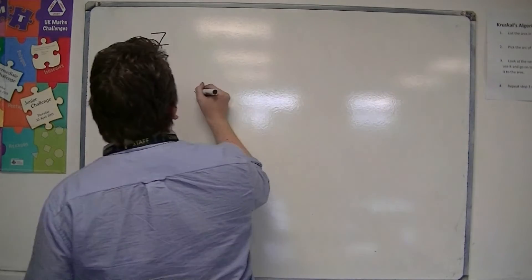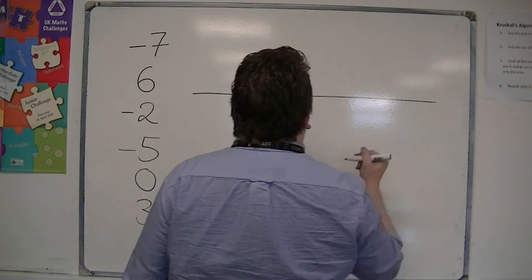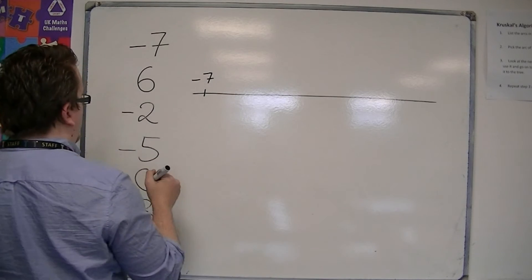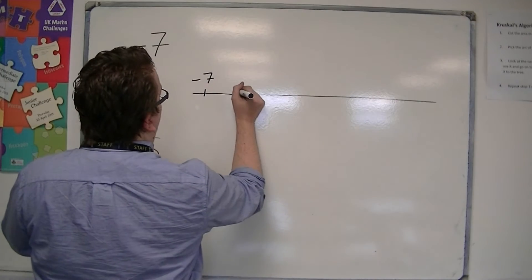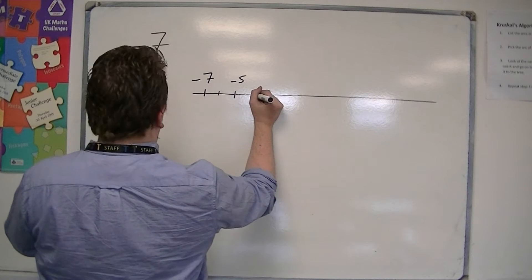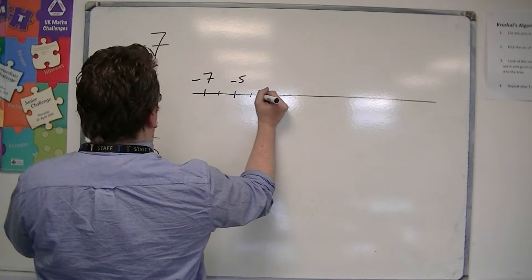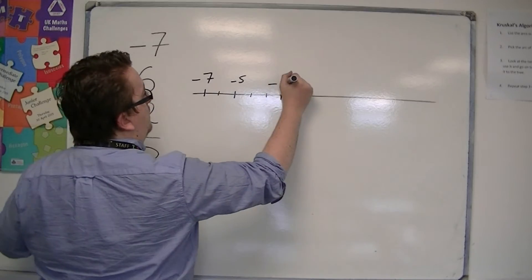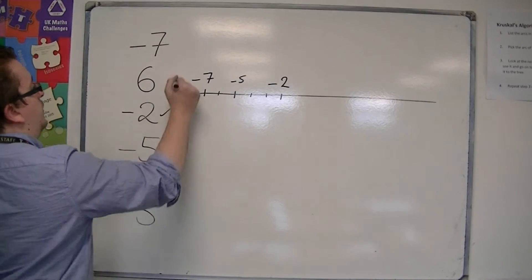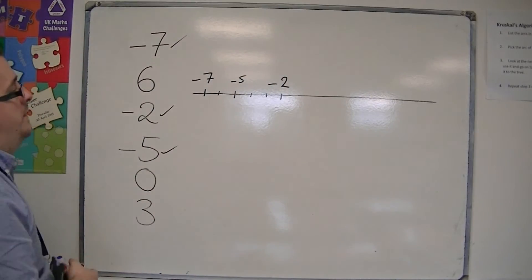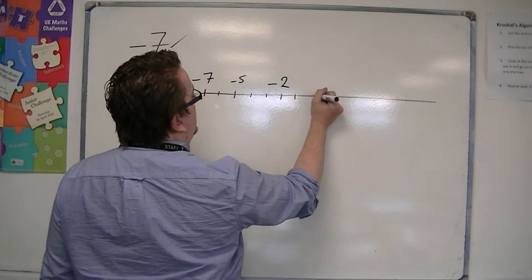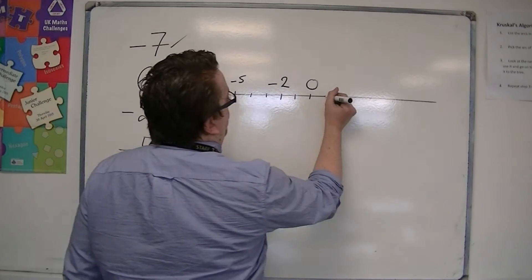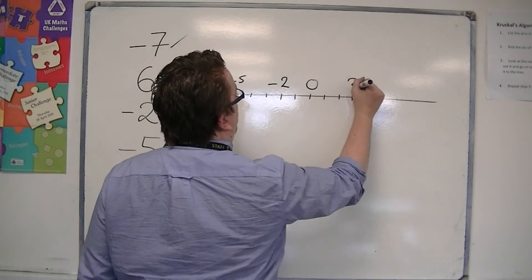So if I were to put these in order on a number line, then we'd be starting off at minus seven, then we would have minus five, then minus four, minus three, minus two — and we have that minus two there, so that's got those three done. Then we'd have minus one, then we'd have zero, which is there. Then we would have one, two, then the three.